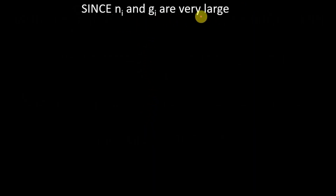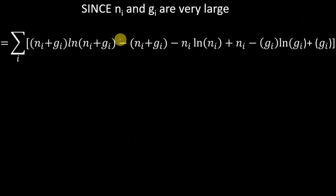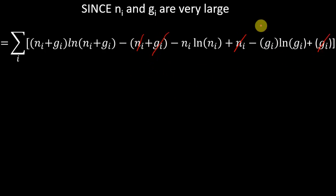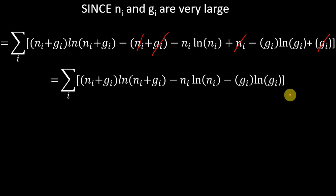Since n_i and g_i are very large, we can ignore the minus 1 terms throughout. Now notice that this is plus n_i and this is minus n_i, and this is plus g_i and this is minus g_i — so these cancel each other, giving us the simplified expression.